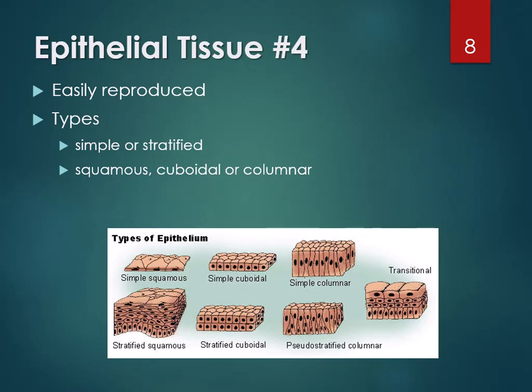Within epithelial tissue, there are also embedded goblet cells, which secrete mucus. You find goblet cells in your trachea and intestines — they keep everything moving in the lumen slippery and slimy, and in the trachea they catch bacteria so it can't get down into your lungs.